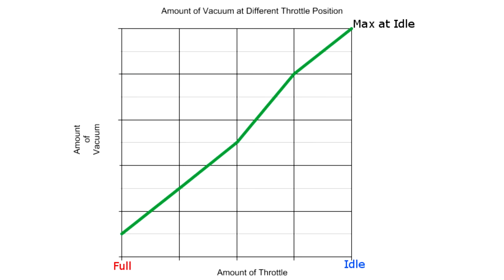As the engine demands more air to run, the amount of vacuum drops. If there is a leak somewhere in the vacuum system, too much air will be let into the system, causing it to run lean, which could cause the following symptoms.